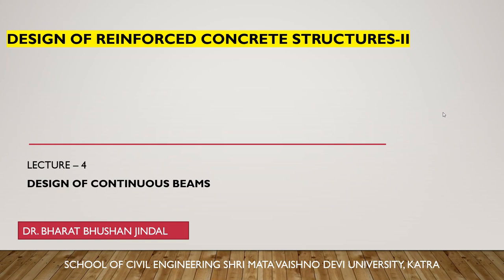In lecture 3 of design of reinforced concrete structures, specifically the design of continuous beams, we discussed some guidelines of Indian Standard code IS 456 regarding the design methodology. The code gives recommendations and limitations for both design and analysis. We also discussed how to calculate the effective span in case of a continuous beam. Today we move to step number four.